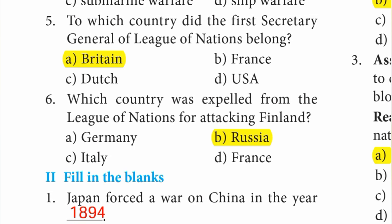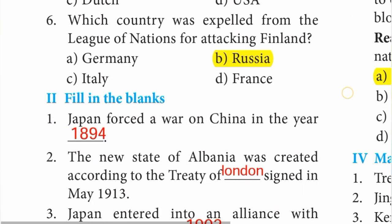Number 6: which country was expelled from the League of Nations for attacking Finland? The answer is B option — Russia. Roman number 2: fill in the blanks.